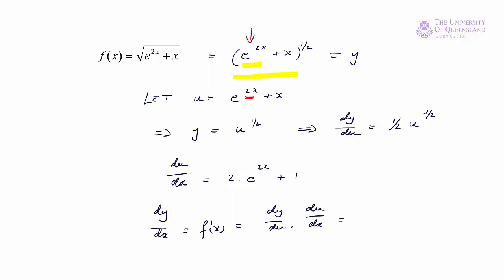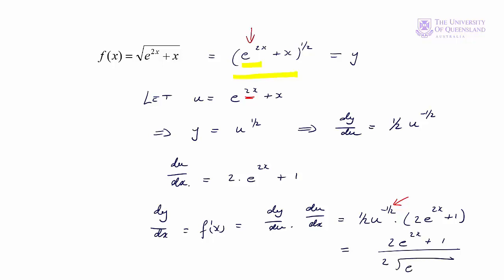That's equal to (1/2)u^(−1/2) · (2·e^(2x) + 1). Replacing u, we have a quotient with the u^(−1/2) giving a denominator. In the numerator we'll have 2·e^(2x) + 1, over 2 times the square root of e^(2x) + x.